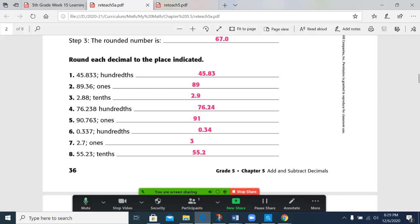0.337 or 337 thousandths to the nearest hundredth. There's a 3 in the hundredth place and a 7 to the right, so that 3 becomes a 4 and we have 0.34. 2.7 to the nearest 1, 2 is in the ones place, 7 to the right goes up to 3. And 55 and 23 hundredths to the nearest tenths. We have a 2 in the tenths place, a 3 does not make that go up, so it stays at 55.2.